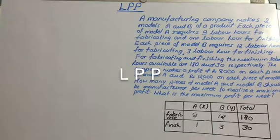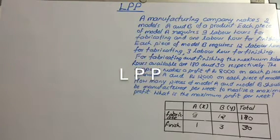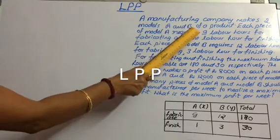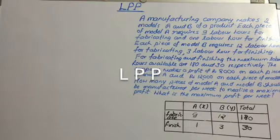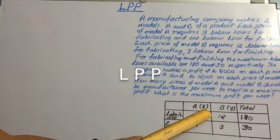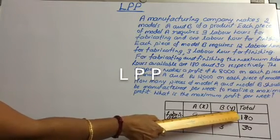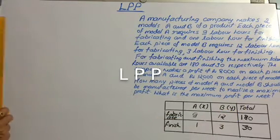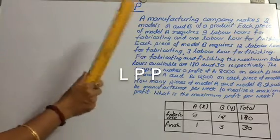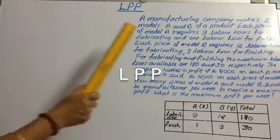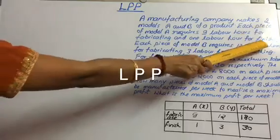From the data we can observe that the company makes two models A and B. We have to find out the number of pieces of model A and model B to get the maximum profit. Let the number of pieces of model A be X and the number of pieces of model B be Y. There are two types of labor hours required for each model: fabricating hours and finishing hours.